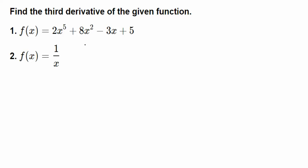Review the previous sections. For the first derivative f', we have 1, 2, 3, 4 terms. The derivative of the first term: 5 times 2 is 10x to the fourth, plus 2 times 8 is 16x, minus 3. The derivative of 5 is 0, so that's the first derivative.